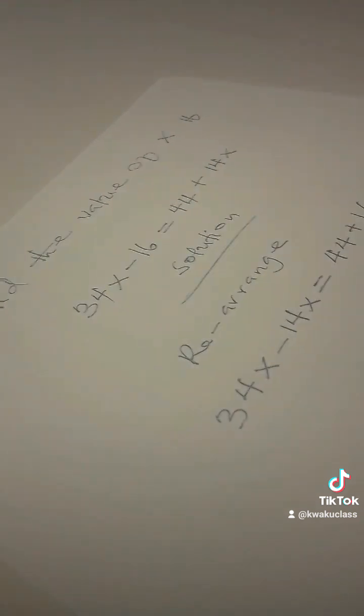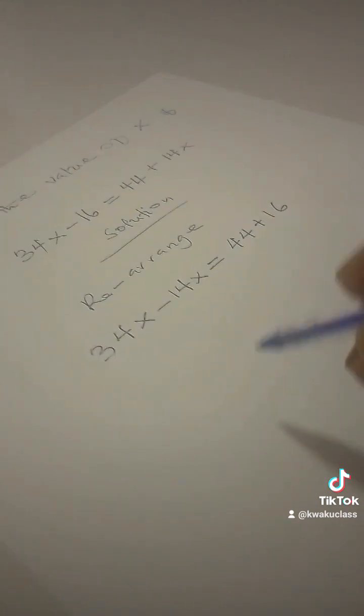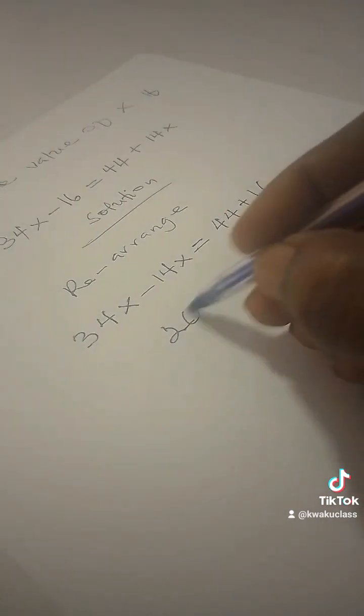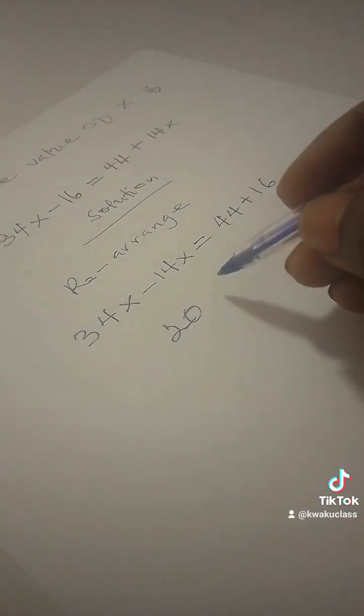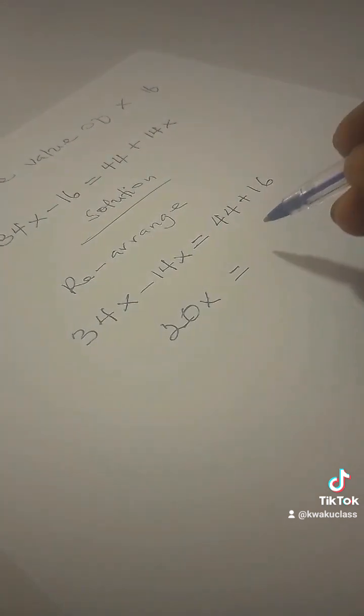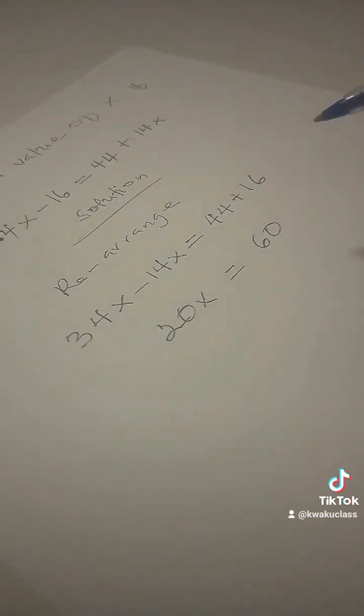Now, 34x minus 14x will give you 20x equal to 44 plus 16 will give you 60.